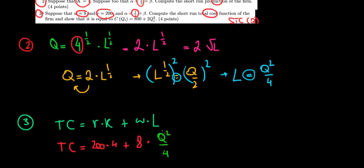Now we can work it out. 200 times 4, that's gonna be 800. 8 divided by 4, that's just 2. So it's gonna be 800 plus 2Q square, and that's gonna be our total cost function in the short run.